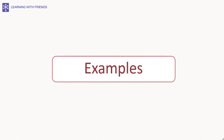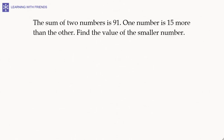In most exams, linear equation questions come as word problems. The trick is to convert the word problem into a linear equation and then solve the equation. For example: the sum of two numbers is 91, one number is 15 more than the other — find the value of the smaller number.